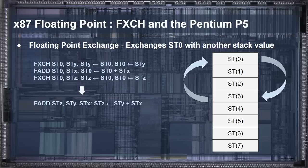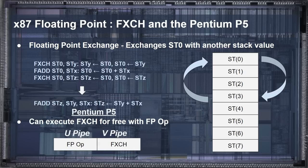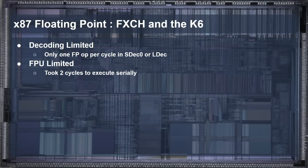Intel knew that f-exchange was necessary to help the top-of-stack bottleneck and came up with a way to make this instruction effectively free in the Pentium. To do this, the f-exchange instruction could execute in parallel with most other floating-point instructions, which gave floating-point on the Pentium the same register flexibility as with the integer instructions. Quake made explicit use of this behavior in its floating-point code, which effectively increased the floating-point throughput by a factor of two.